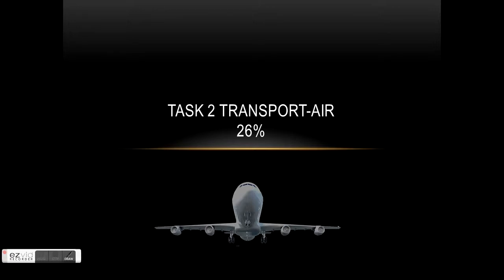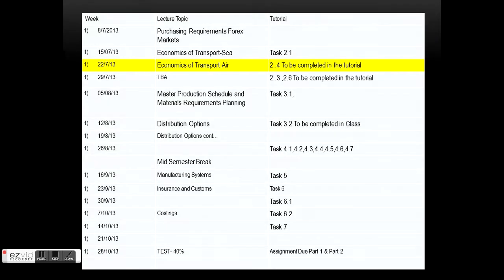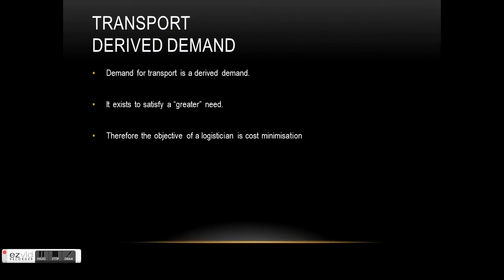Welcome to Task 2 - Transport, worth 26%. Today we'll introduce some of the concepts behind transport economics and what makes a viable transport operation. The first concept to note is that transport is a derived demand. Nobody gets on an airplane for the sake of getting on an airplane - they do so to get married, go on a holiday, or get a facelift. It's all there to satisfy a greater need.